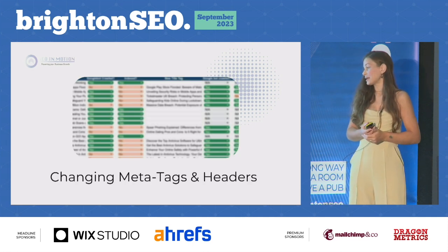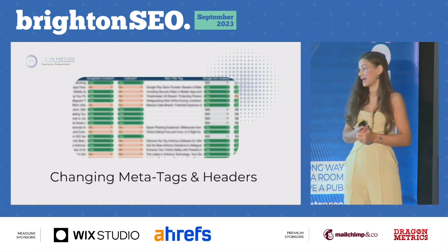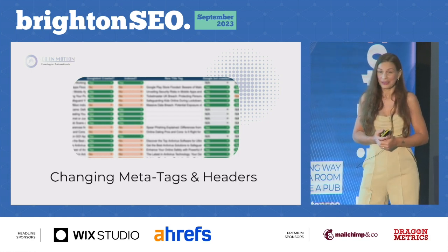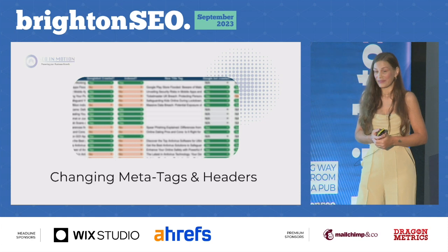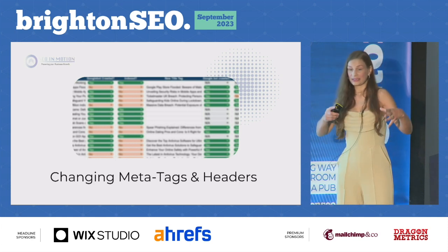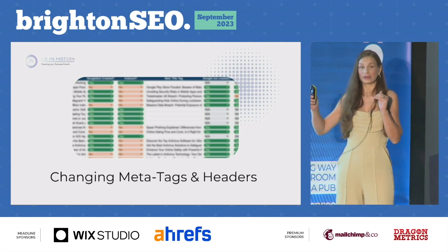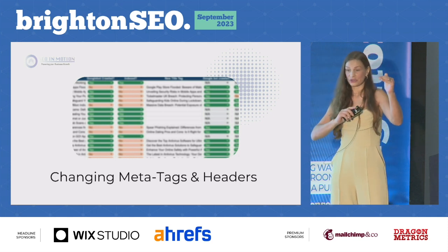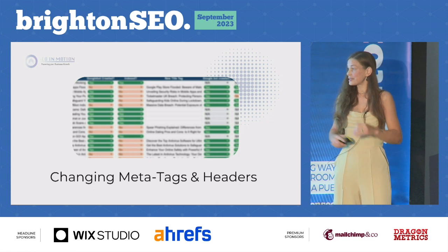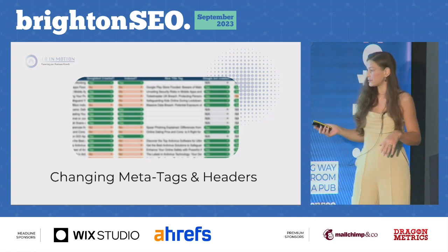You can also look at changing meta tags and headers, especially if something isn't getting indexed. Testing different meta tags, different headers, different components on the page — something as simple as adding a table of contents to the top of the page with anchor links can really change how that content is viewed.